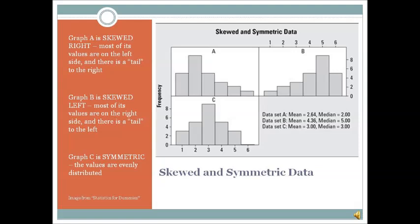Graph C is symmetric. I like this. It's a nice, normal-looking distribution. The values are evenly distributed about the mean. You'll notice also in data set C, the mean and the median are the same. And that happens frequently with symmetric data.